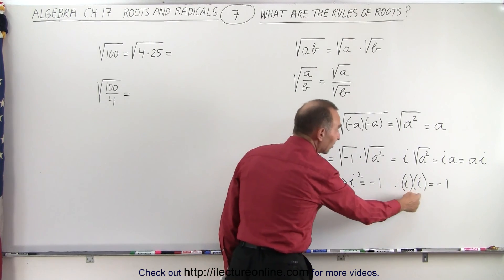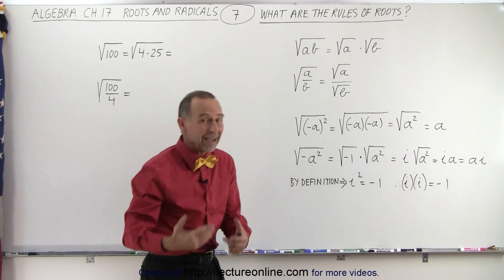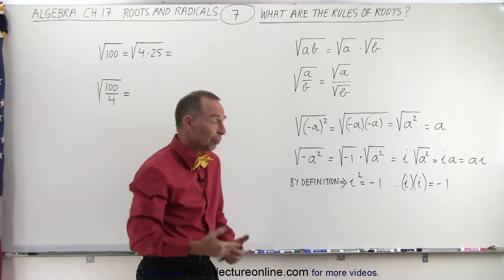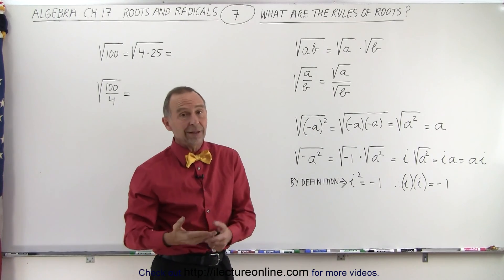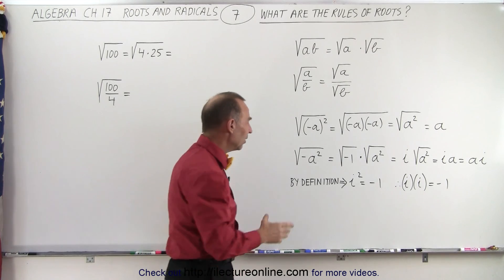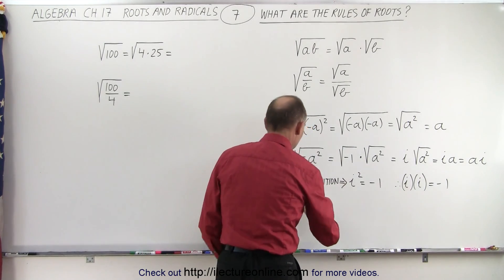So, i times i is negative one. And of course, if i times i is negative one, then the square root of negative one is equal to i. But that is an imaginary number.